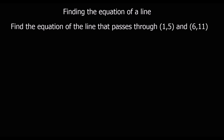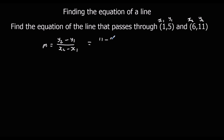Here we've been asked to find the equation of the line that passes through (1, 5) and (6, 11). So the first thing we're going to do is find the gradient. The gradient is y2 minus y1 over x2 minus x1. So we've got x1, y1, x2, y2. We're just going to substitute these numbers in: 11 minus 5 over 6 minus 1. So the gradient is 6 over 5.